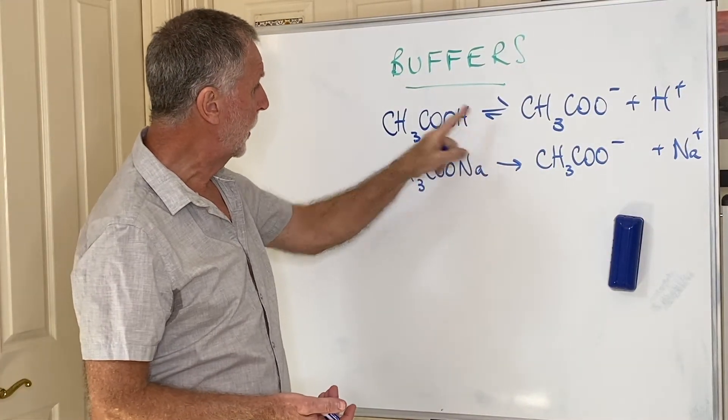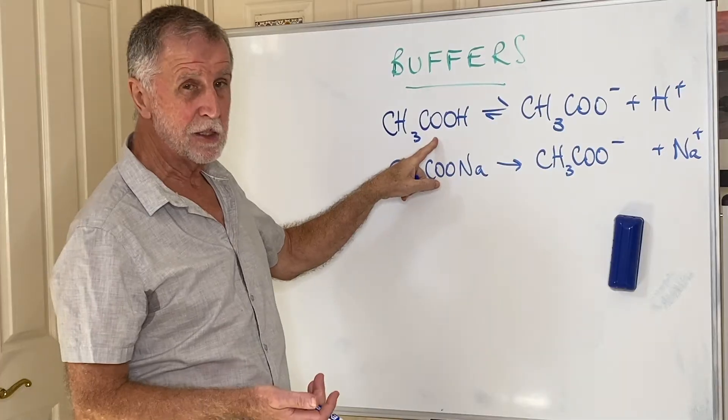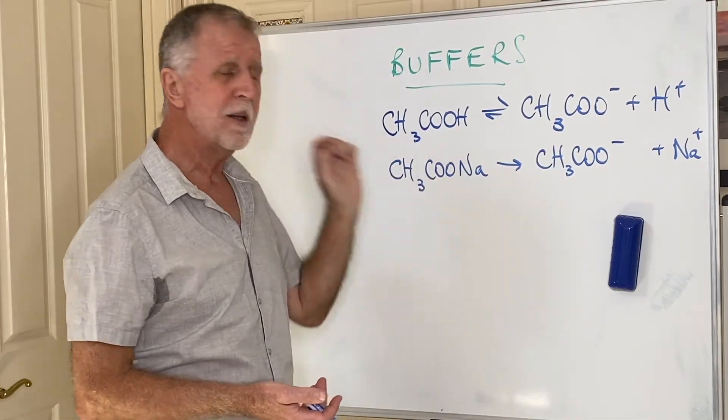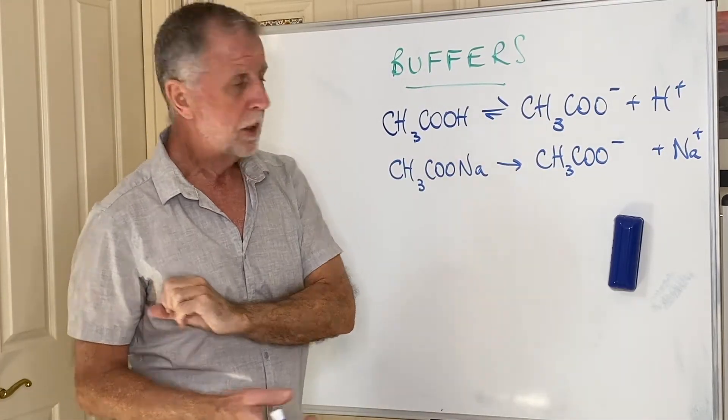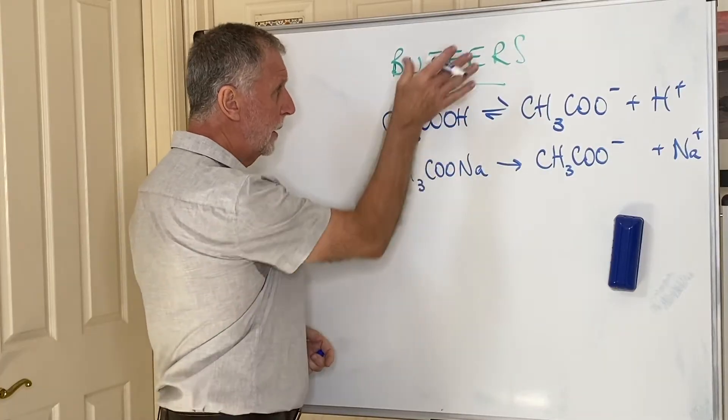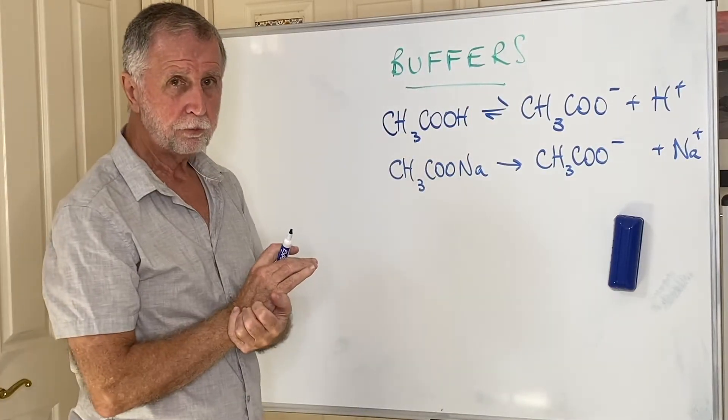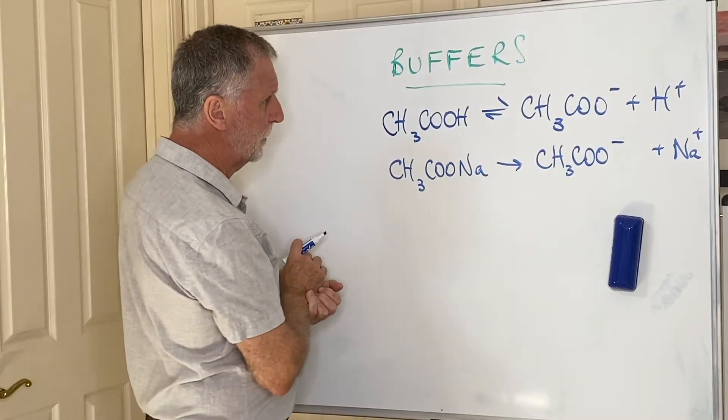This, on the other hand, as we know, is very much on the left-hand side. It's a weak acid and hardly any of it dissociates. Now, these two together makes a buffer.